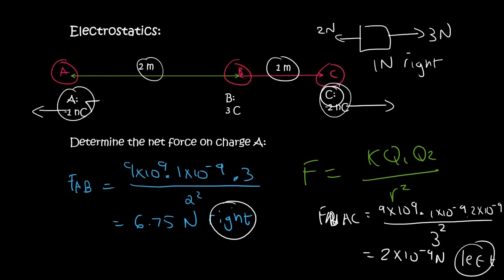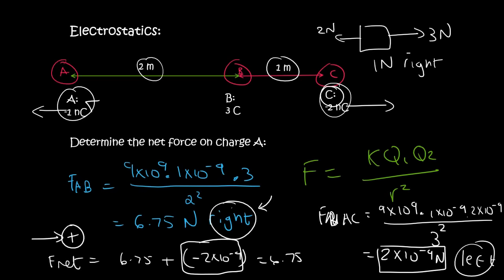So we need to choose a direction as positives. Let's say right is positive, then F net will be equal to the right, which is 6.75 plus, then you say minus, because this one is acting to the left, 2 times 10 to the minus 9. And if you work that out, you still end up with 6.75. Why? Because this number is so small that it pretty much has no effect. And so we get 6.79 Newtons to the right. So this charge C is so small that it actually didn't really have an effect on A at all.